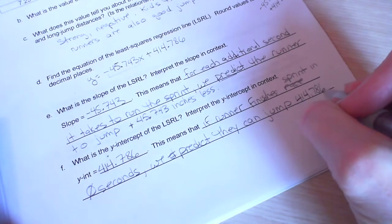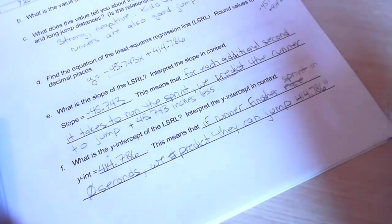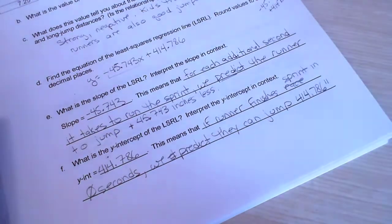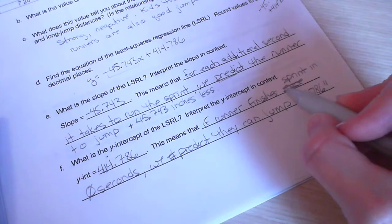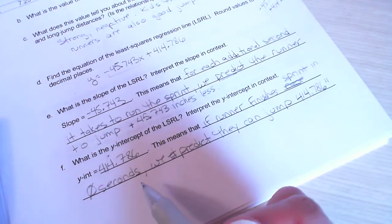which really doesn't make sense in this context, we predict they can jump 414.786 inches. That's a symbol for inches. So, it's hard. This doesn't make sense, really, for this problem. You can't run a sprint in zero seconds, but that is what the y-intercept means.